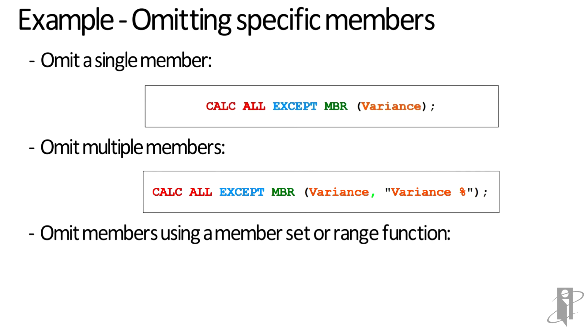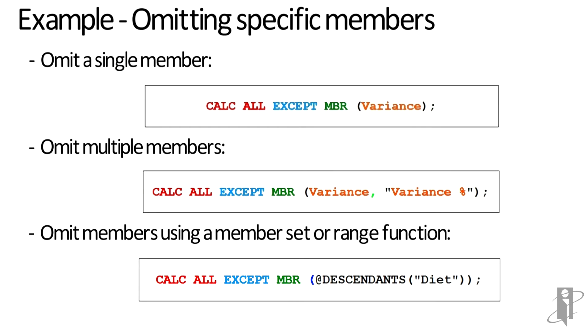You can even put a member set function in the parentheses if you want. I could calculate all of the dimensions and all the members except the things beneath diet by saying CALC ALL EXCEPT MBR parentheses @DESCENDANTS parentheses diet parentheses parentheses semicolon.